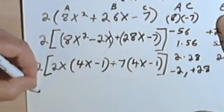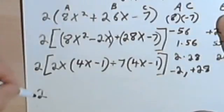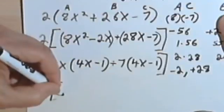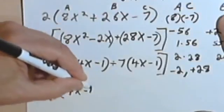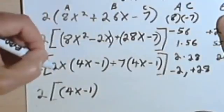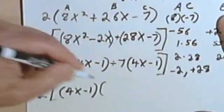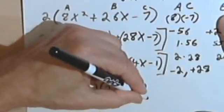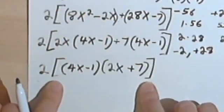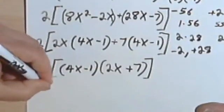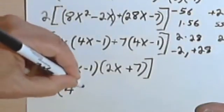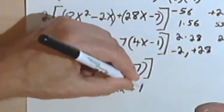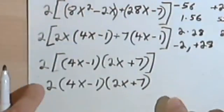So that means let's not forget the 2. I'm going to factor out the 4x minus 1. And that's going to leave me with my other factor as 2x plus 7. And it looks like I don't need these brackets anymore, so I can take them away. I'm going to have 2 times 4x minus 1 times 2x plus 7. So this should be my answer.